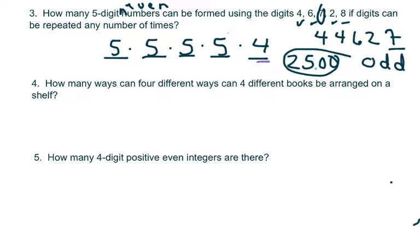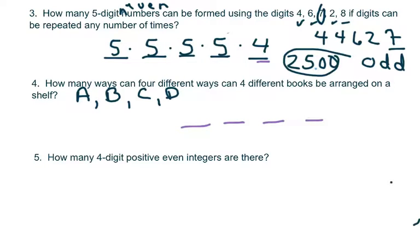How many ways can four different books be arranged on a shelf? Call the books A, B, C, and D. I have four ways to pick the first book. Once I place it, I have three different ways for the second, then two, then one. So the total is 4 × 3 × 2 × 1 = 24 ways.